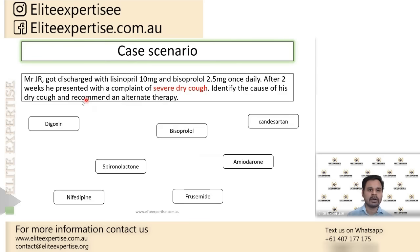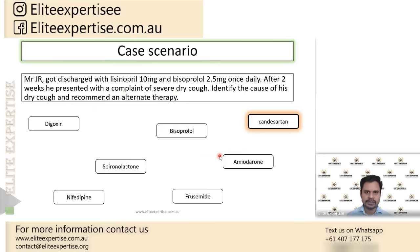The cause of dry cough is lisinopril — the ACE inhibitor. We need to switch to another drug class. From the given list, candesartan is an ARB — angiotensin receptor blocker. We switch from lisinopril to candesartan. The patient is now on candesartan, bisoprolol, pantoprazole, metformin, and the antidiabetic agent.